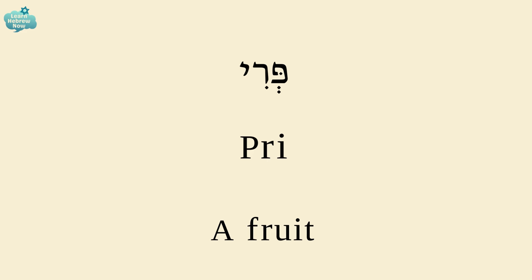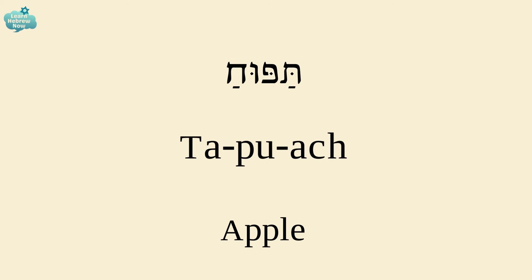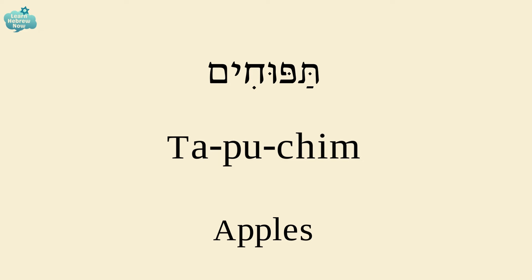The word for a fruit is PRI. And the plural for fruits is PEROT. An apple is TAPUACH.